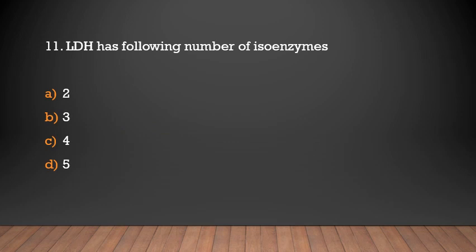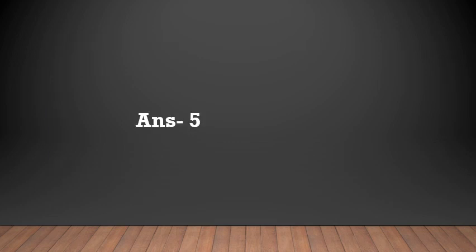LDH has how many isoenzymes? Options: 2, 3, 4, or 5. Answer: 5.